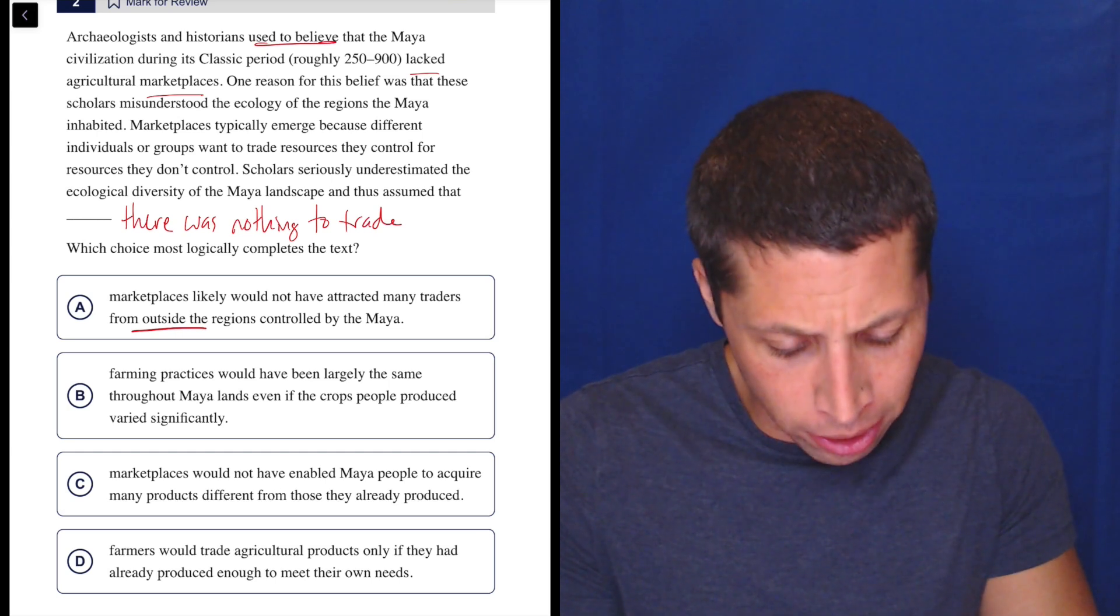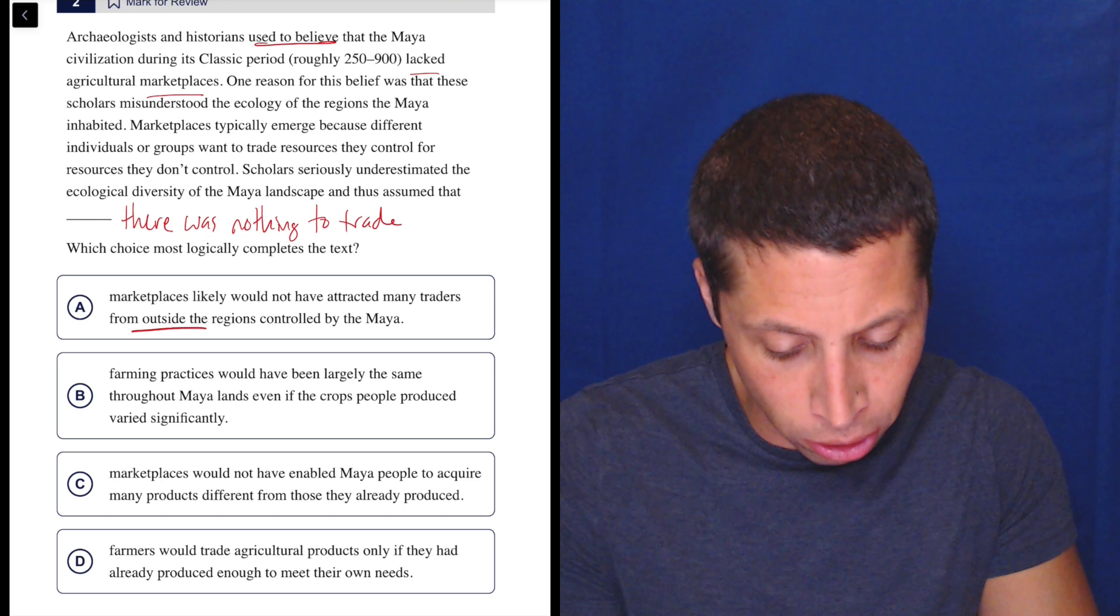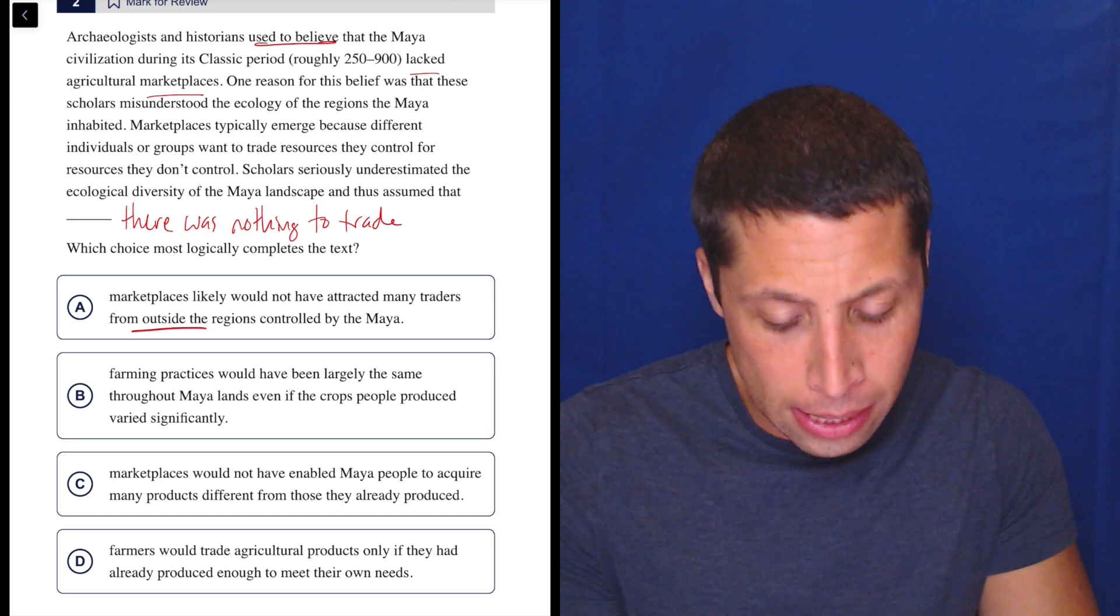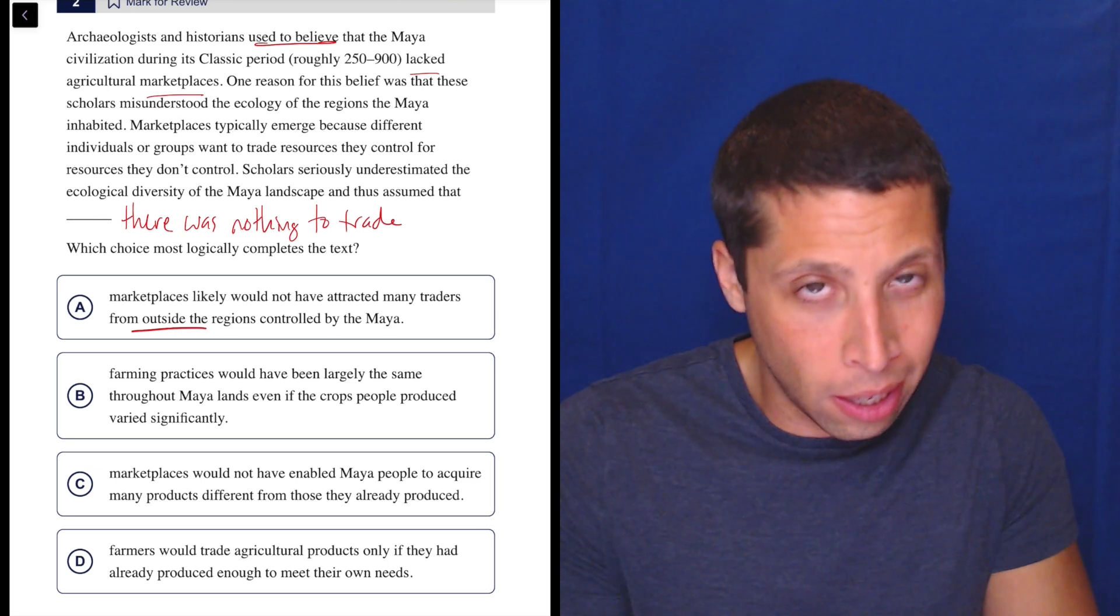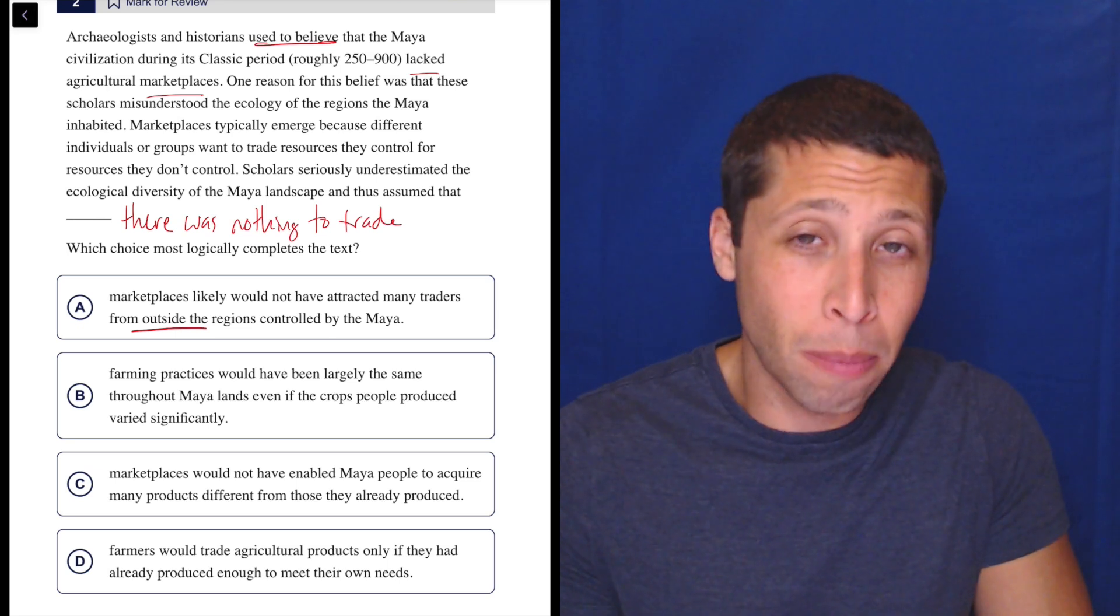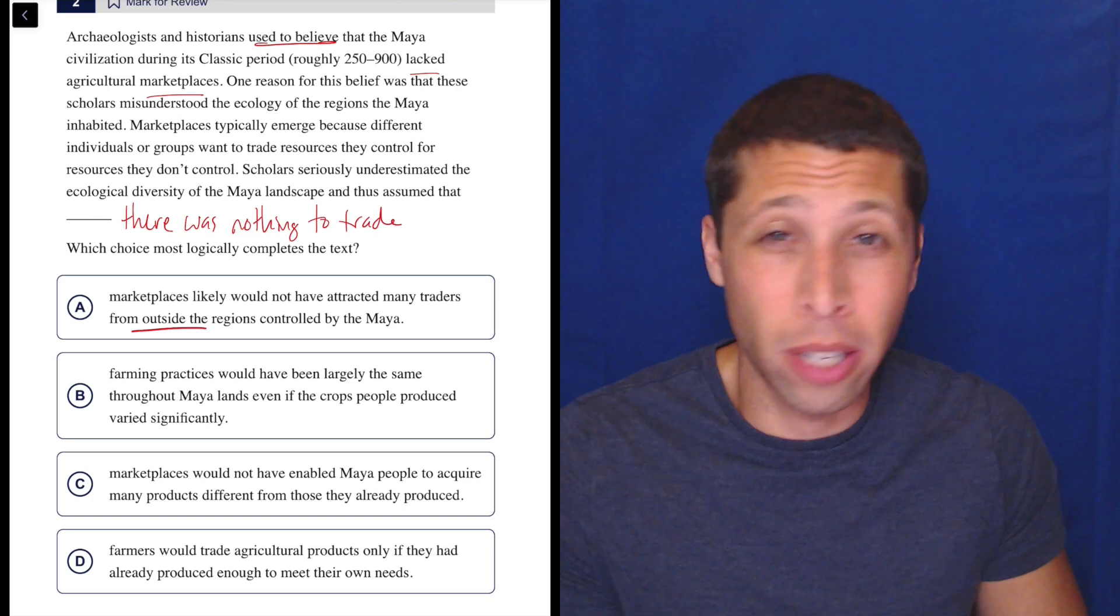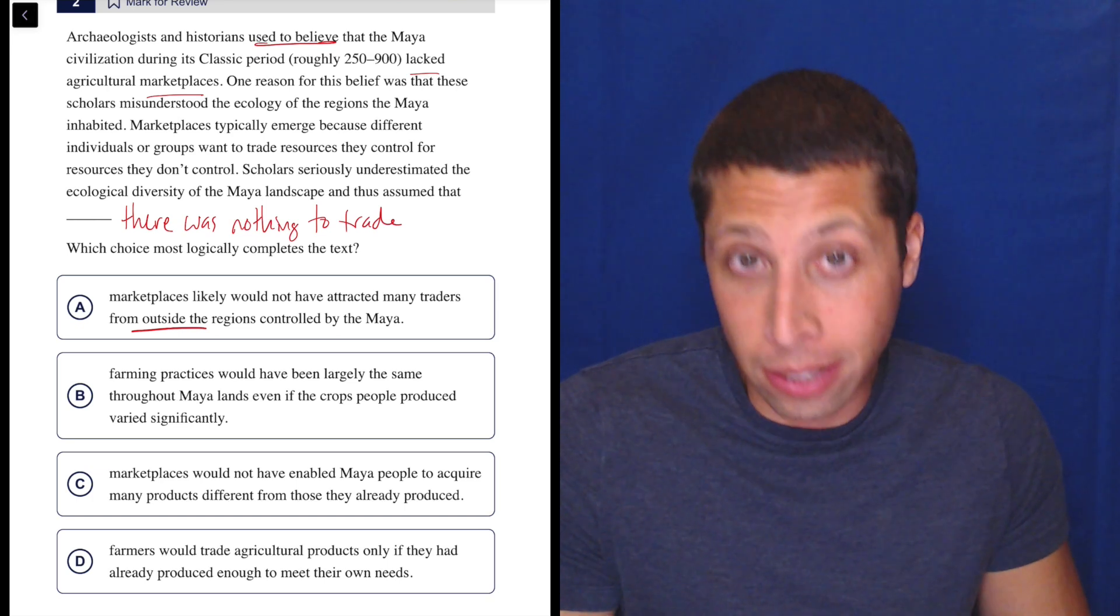Are we talking about other places? We're talking about marketplaces because different individuals want to trade resources they control for resources they don't. Seems like we're talking about the Maya themselves. I don't love that we're bringing in other people. Maybe that's okay. Remember logic questions sometimes allow us to bring in information from outside the passage, but I'm at least noticing it. Let's see if we can do better.